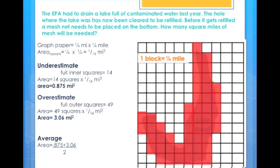So, now I will need to find the average of these two by adding the two areas together and dividing by two, which gives me approximately two square miles of mesh netting needed to cover the bottom of this lake.